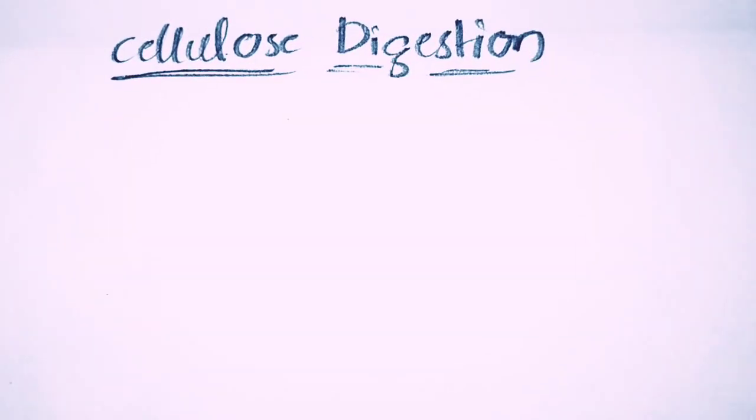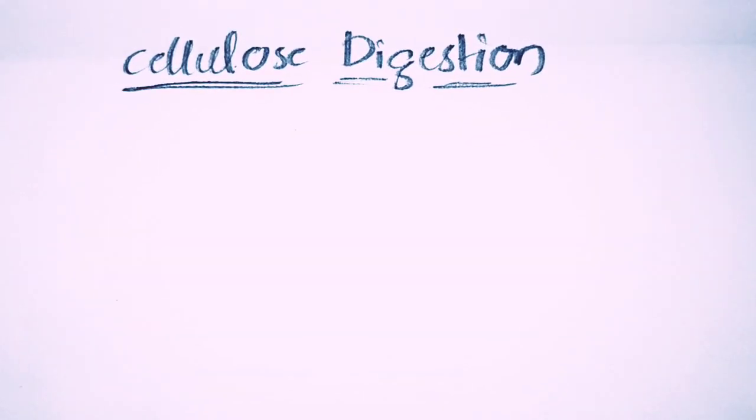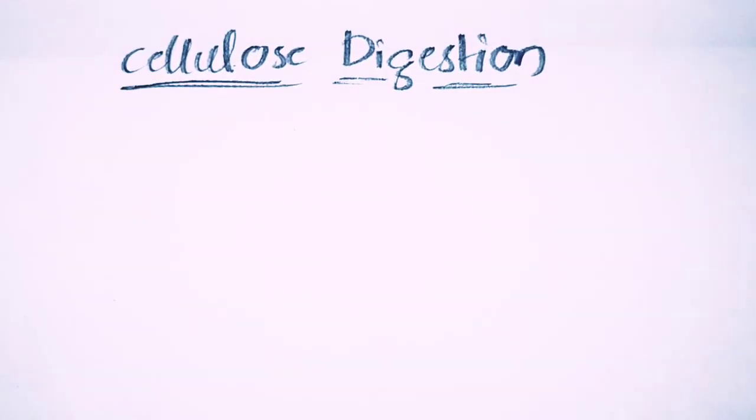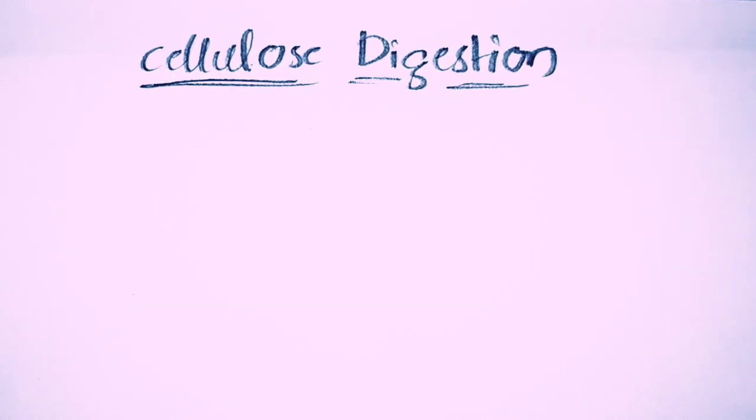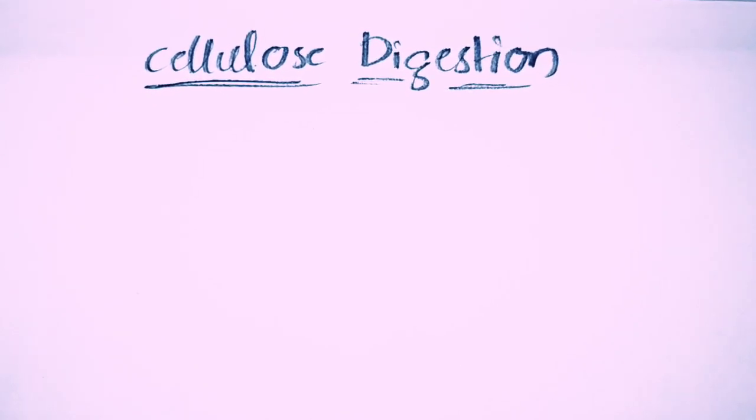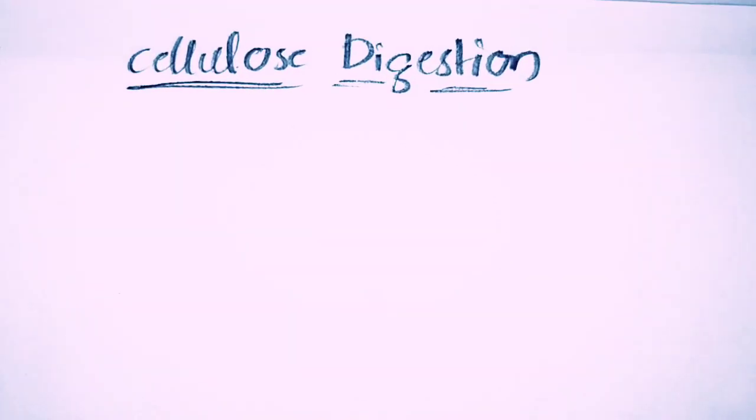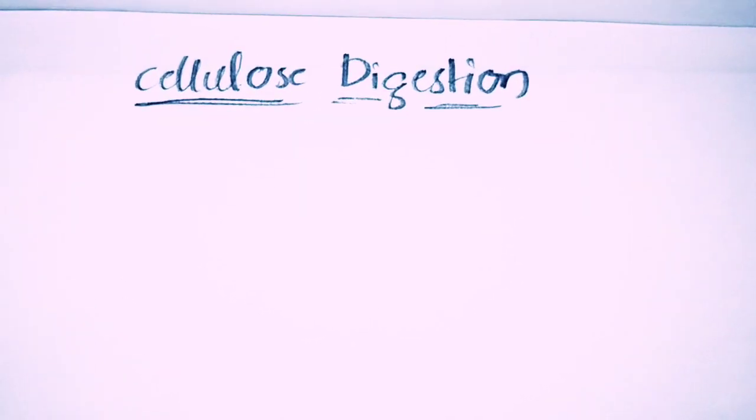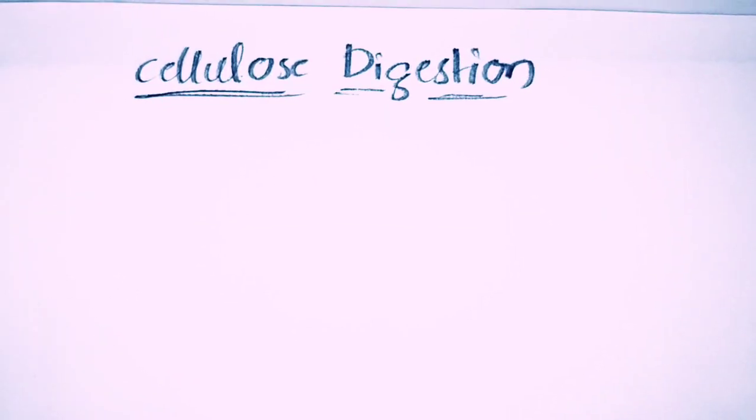Hello, in this video I'm going to explain cellulose digestion of BSc Zoology semester 3. Before moving on, let me ask you one thing: what do you actually mean by digestion? Digestion, as we all have learned even in our lower classes, is a process where the breakdown of complex substances into simpler substances occurs.